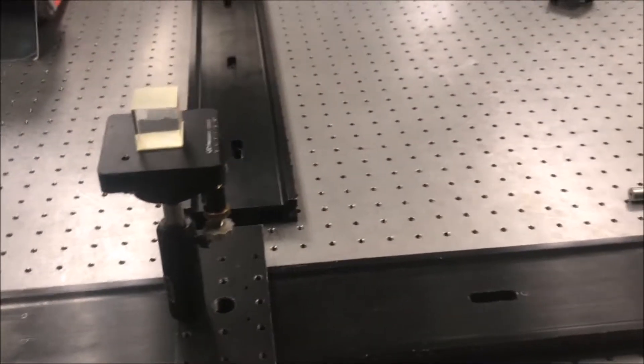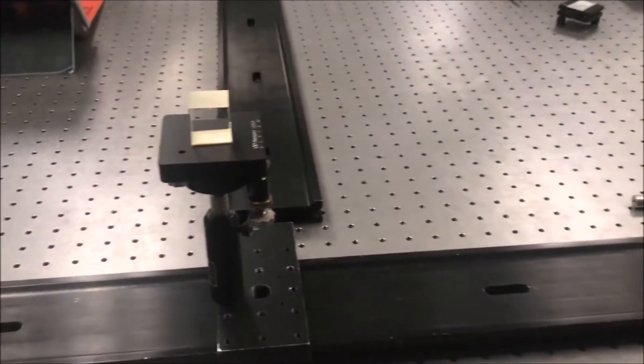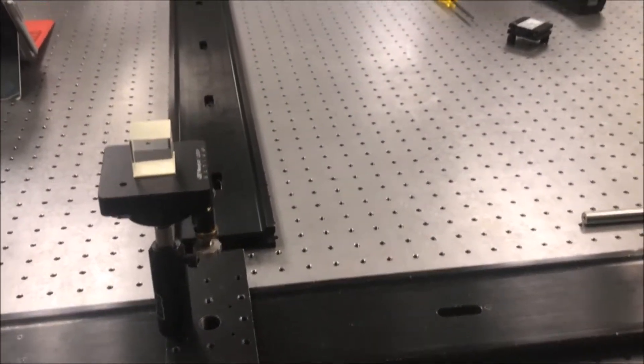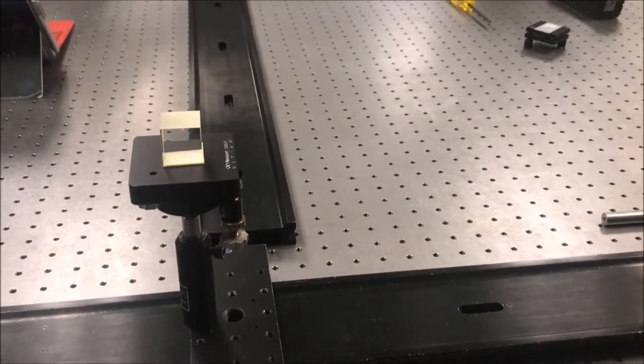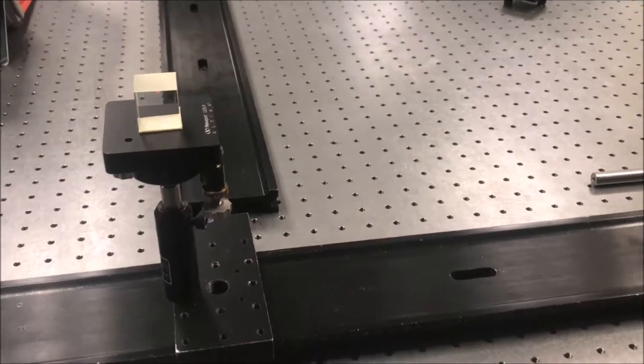However, when we used the corner cube, we ensured everything was the same by ensuring that we had the same table, the same railings, and everything was in the same level. So when making that comparison, we can say that the beam splitter is probably the best comparison for us to make sure everything was aligned.